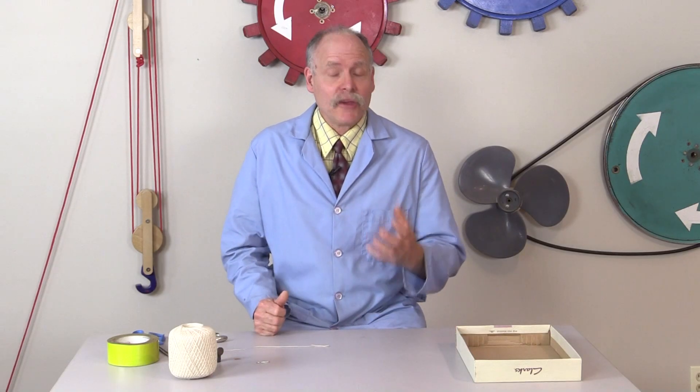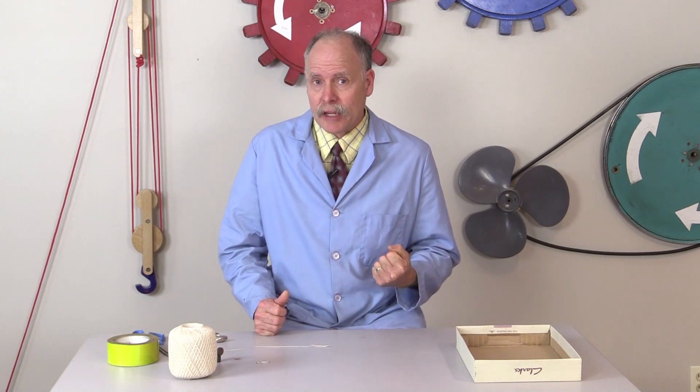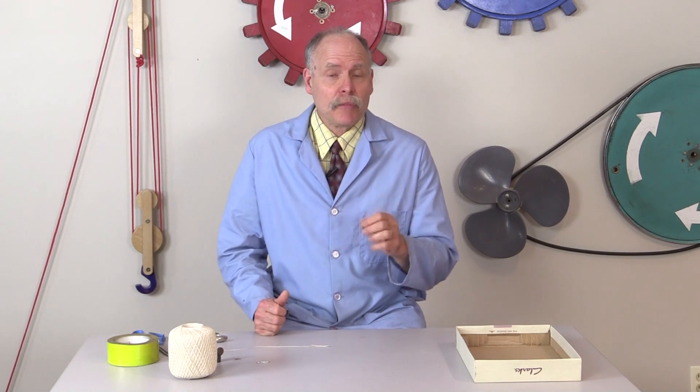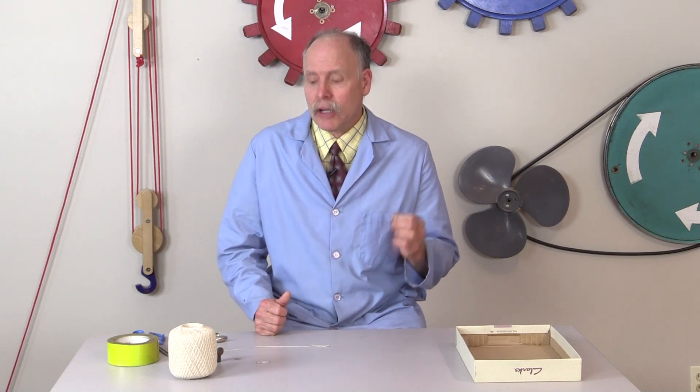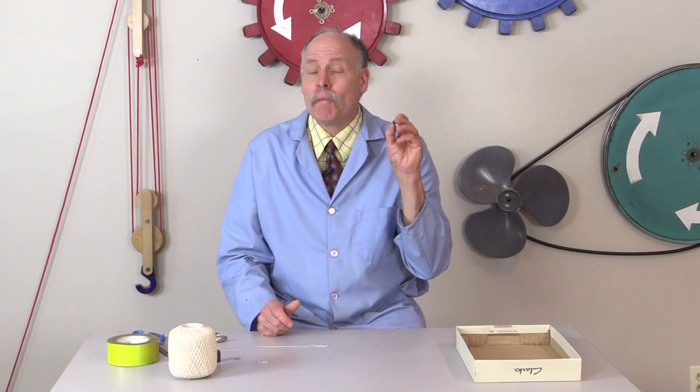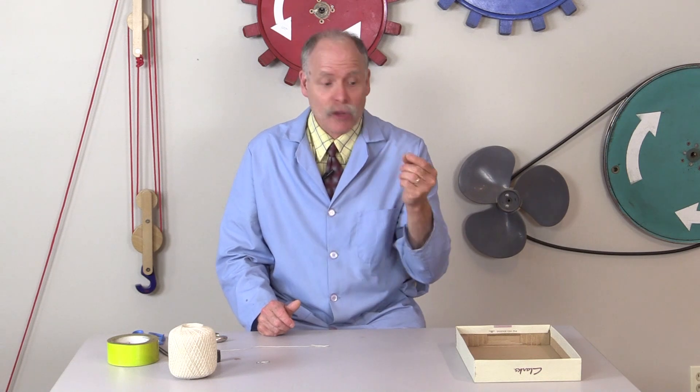So a ferromagnetic object is an object that's attracted to a magnet. Now we can use that magnetism to balance out the force of gravity. Gravity is not that strong. We can use a little button magnet like this to balance out the force of gravity of the whole earth.